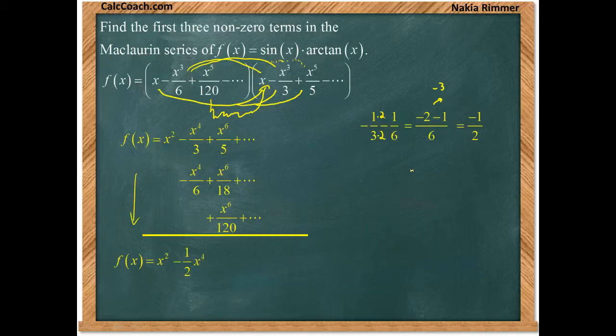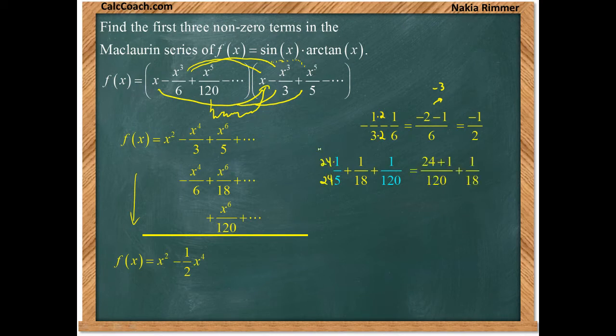So that's the coefficient on x to the fourth. As far as the coefficient on x to the sixth, there's three fractions we need to add: a fifth, an 18th, and one over 120. It isn't very obvious what the common denominator between all three of them is going to be, but I look at one fifth and one over 120 and know I can put those together rather quickly knowing that the common denominator is 120 and it takes 24 times five to get to that. So I have 24 plus the one, putting these two guys together to give me 25 over 120.